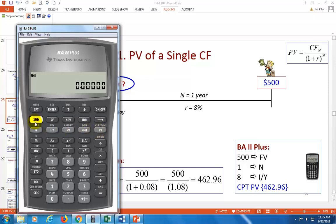So anyhow, second clear TVM, second clear work and put in the values. 500 is your future value. One is your N and eight is your required rate of return you compute. What are we computing? PV. There you go. To remove this negative, just hit the plus minus key here. And that's your result.